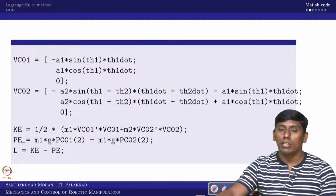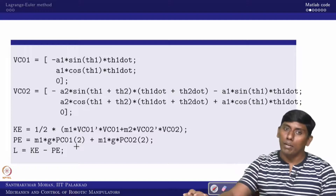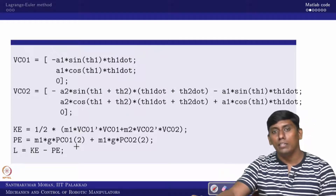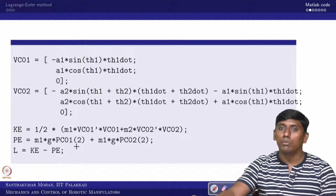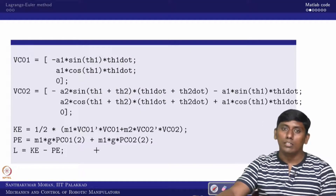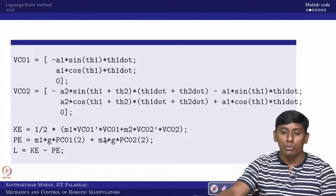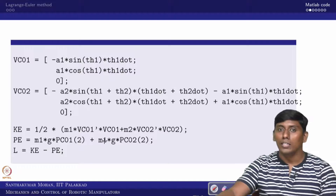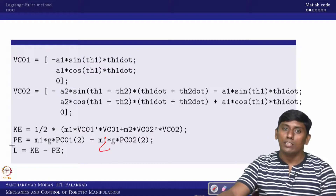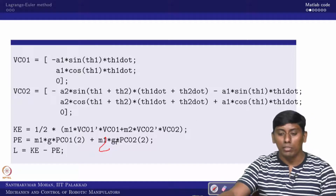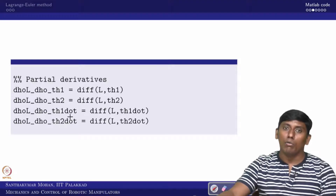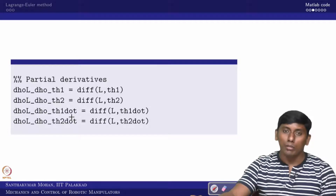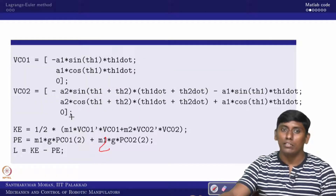For the potential energy, since gravity acts vertically, we use Y1 from PC01(2) and Y2 from PC02(2). Note there is a typo in the notes — it should be M2, not M1; this will be corrected in the MATLAB code and the handout. The potential energy is then expressed at this point. The Lagrangian is kinetic energy minus potential energy, and we write that accordingly.